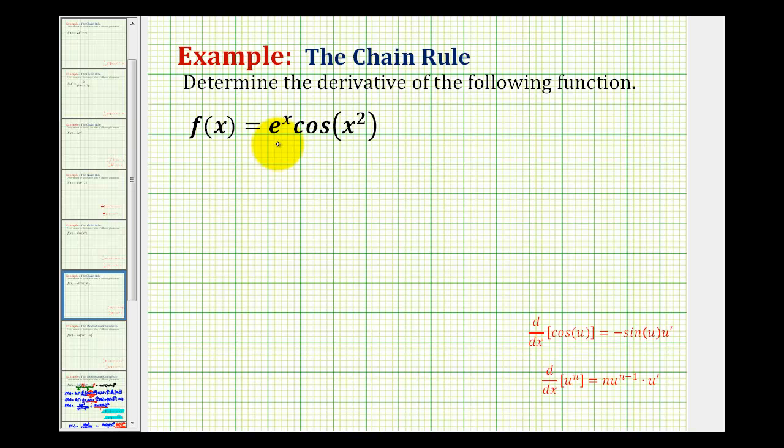To determine the derivative of the given function, we need to recognize that we have a product of two functions, so we'll have to apply the product rule. But also that the second function, cosine x squared, is a composite function. So we'll have to apply the chain rule when differentiating this part.